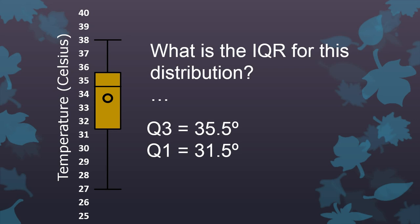So, Q3 looks like it's 35.5 degrees. Q1 looks like it's 31.5. So, there's the IQR. You just subtract. 4 degrees. 4 degrees is the IQR. So, the middle of that box plot, the box part, spans 4 degrees.